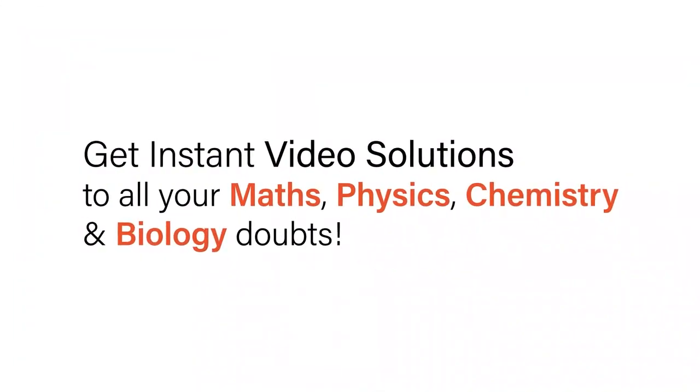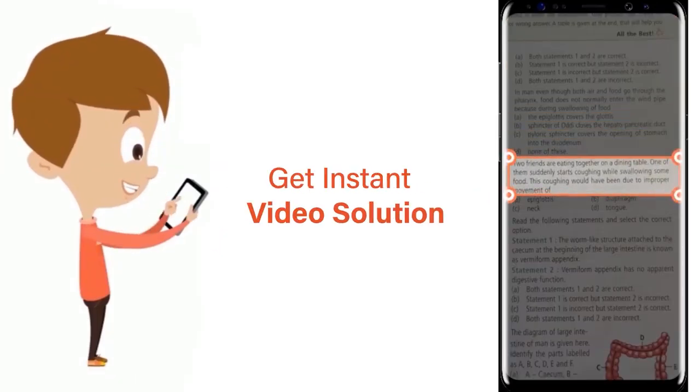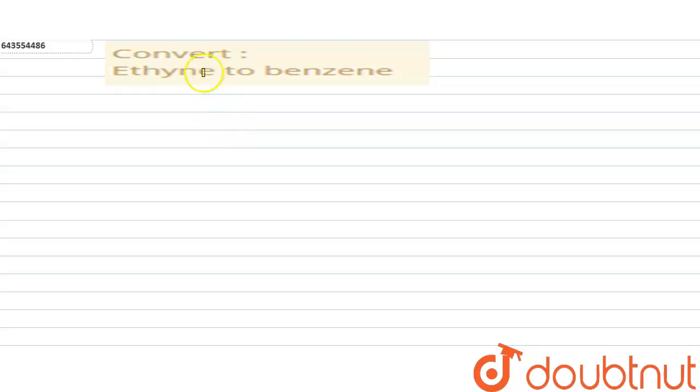With Doubtnet, get instant video solutions to all your maths, physics, chemistry, and biology doubts. Just click the image of the question, crop the question, and get instant video solution. Download Doubtnet app today. Our question is: convert ethane to benzene.